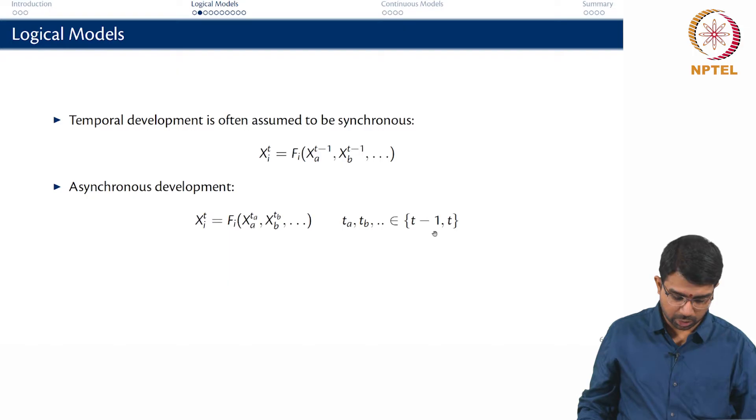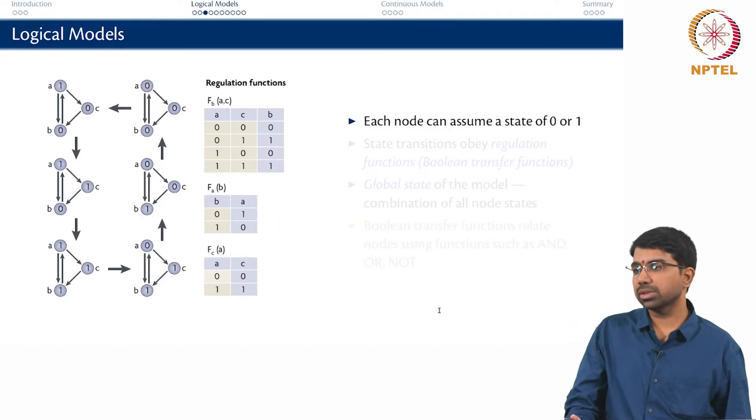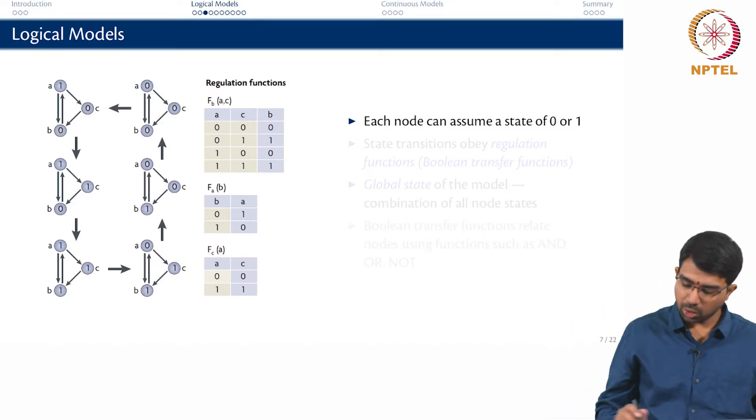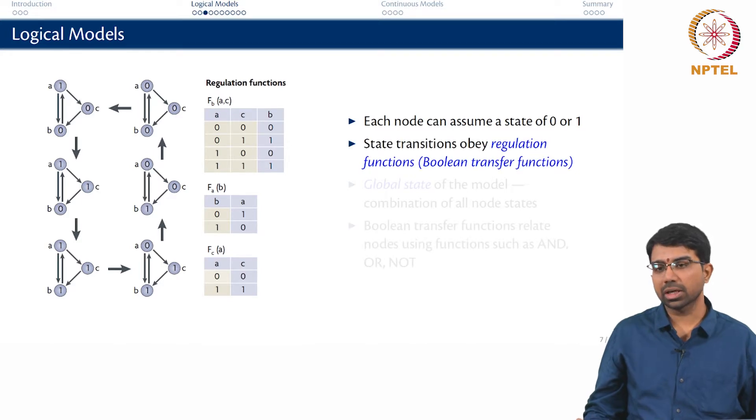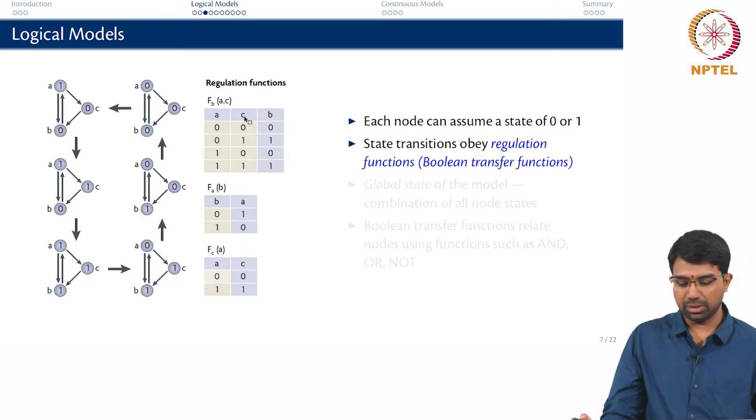So how do you set up these rules? That becomes the next question. Let us look at a simple example. The first thing we assume is that every node is only in 2 states, it is either on or off. Basically 1 or 0, and all the state transitions obey the Boolean regulation functions or what we translate to Boolean transfer functions. So can you tell me what is this function? This is basically a truth table which says what happens to b as a function of a and c.